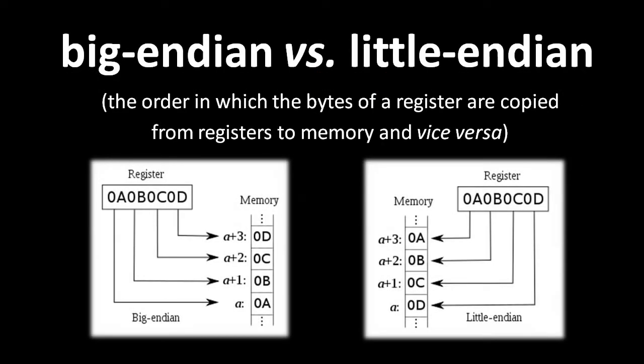You're probably familiar with the Jonathan Swift book Gulliver's Travels. A part in the book not depicted in the cartoon is that in the land of Lilliput, the Big-Endians are at war with the Little-Endians over whether to crack eggs from the big end or from the little end — the joke being that the choice is totally arbitrary. CPU designers have a similarly arbitrary choice to make concerning how the bytes in a register get copied to and from memory. Say we have a 32-bit register with the bytes in hex 0A, 0B, 0C, 0D.